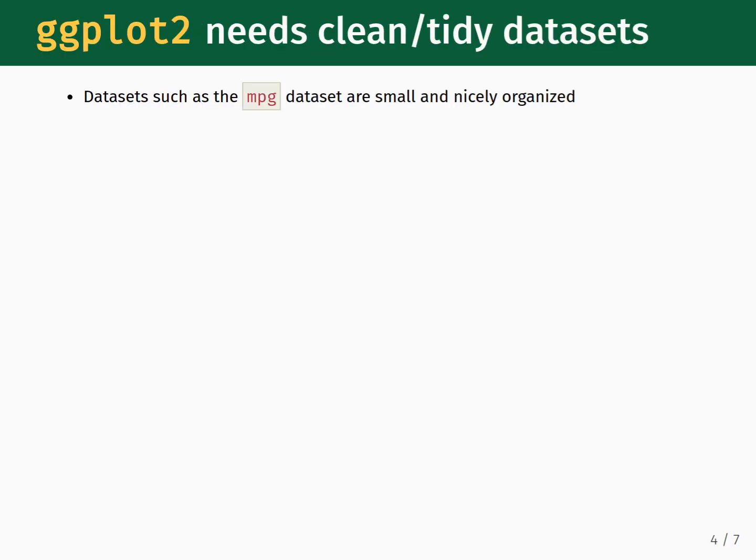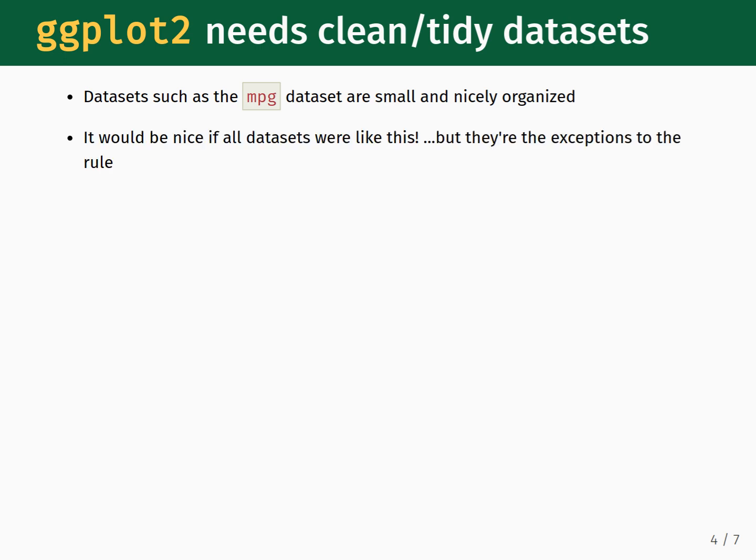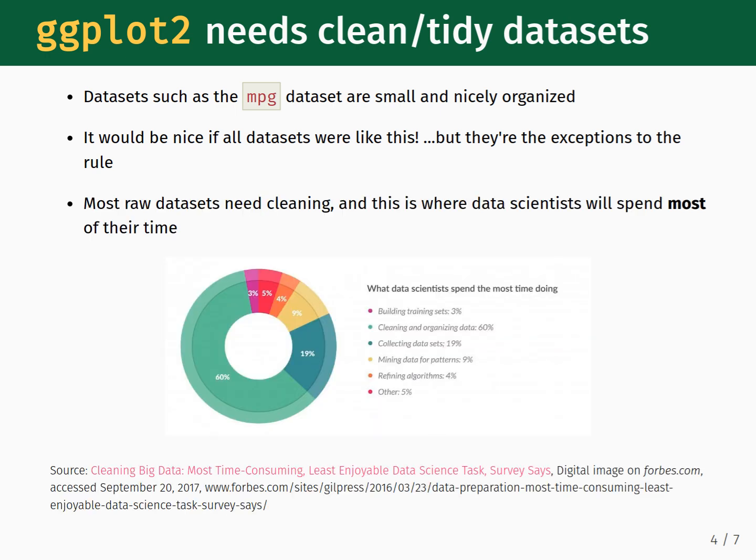It is important that we have a set of tools available for cleaning and organizing datasets, as visualization libraries like ggplot2 require us to have clean and tidy datasets available. Up until now, the datasets you have been provided with as examples, such as the MPG dataset, have been carefully chosen as they are small and nicely organized. It would be nice if all datasets came to us looking like this, but those are the exceptions to the rule. Most raw datasets need cleaning, and as an informal poll of data scientists by Forbes magazine found, this is what data scientists will spend most of their time doing.